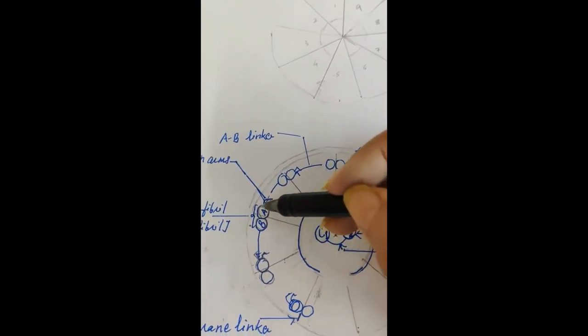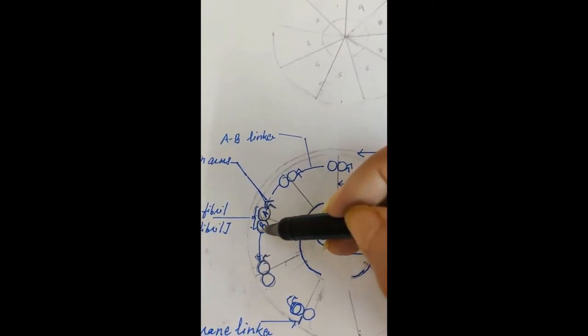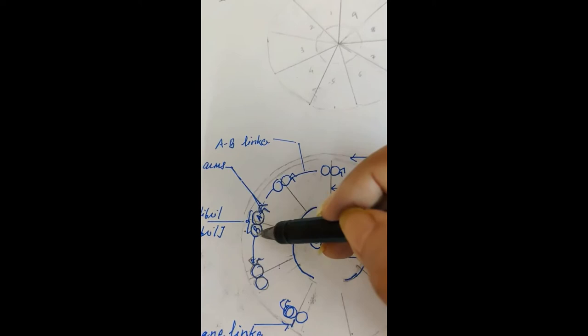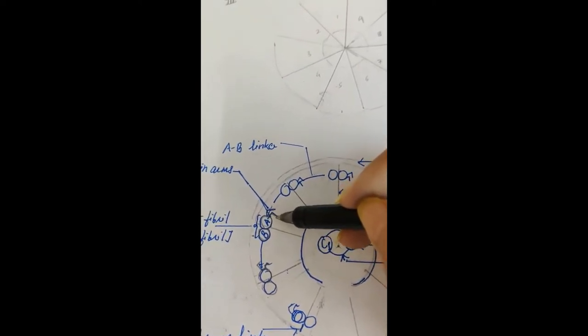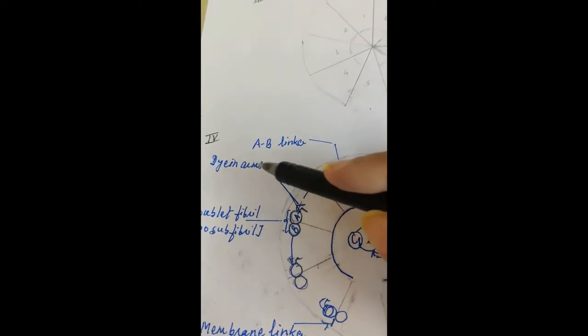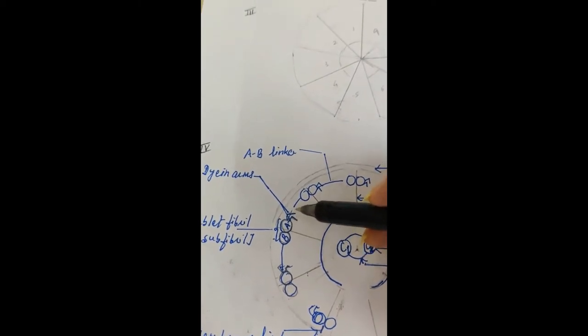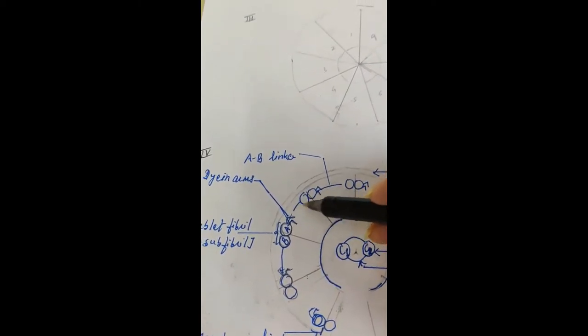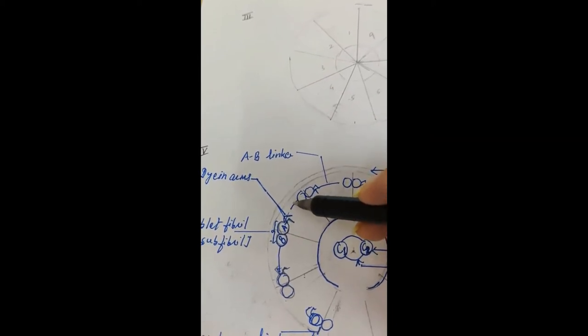The subfibrils made up of tubulin. They are complete, A and B. A should be slightly larger than the B. On A, make two arms. They are dynein protein, dynein arms, which will interact with the other, you know, the cell membrane that is the sheath.